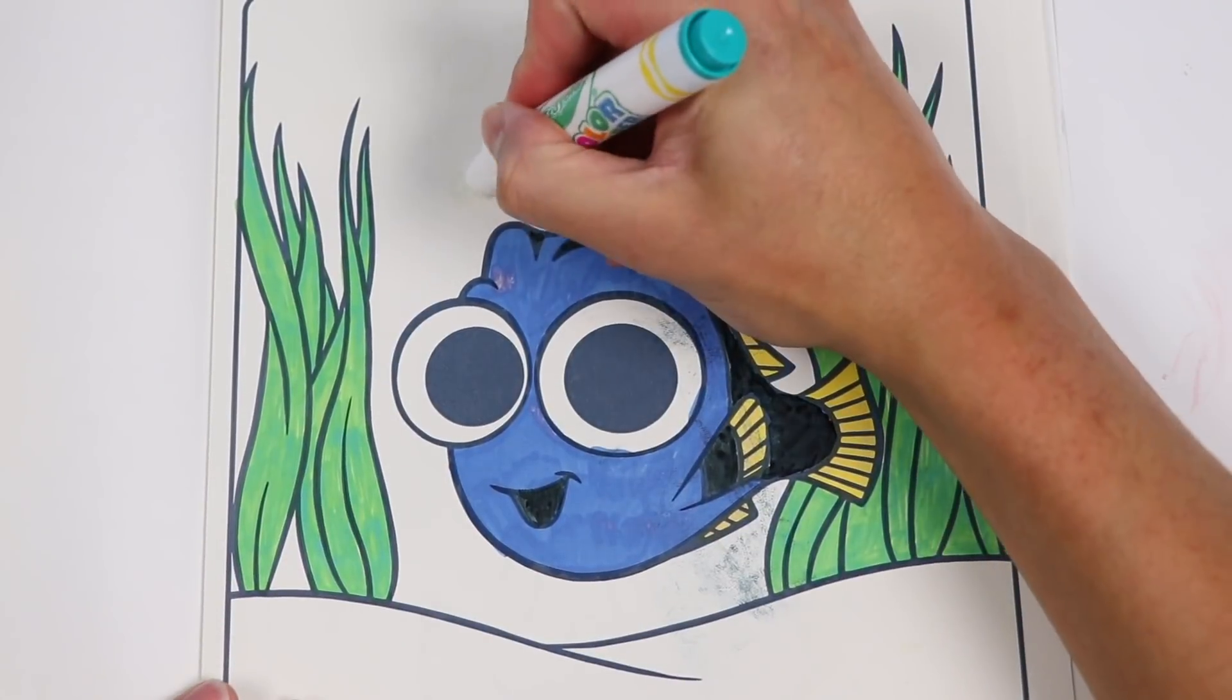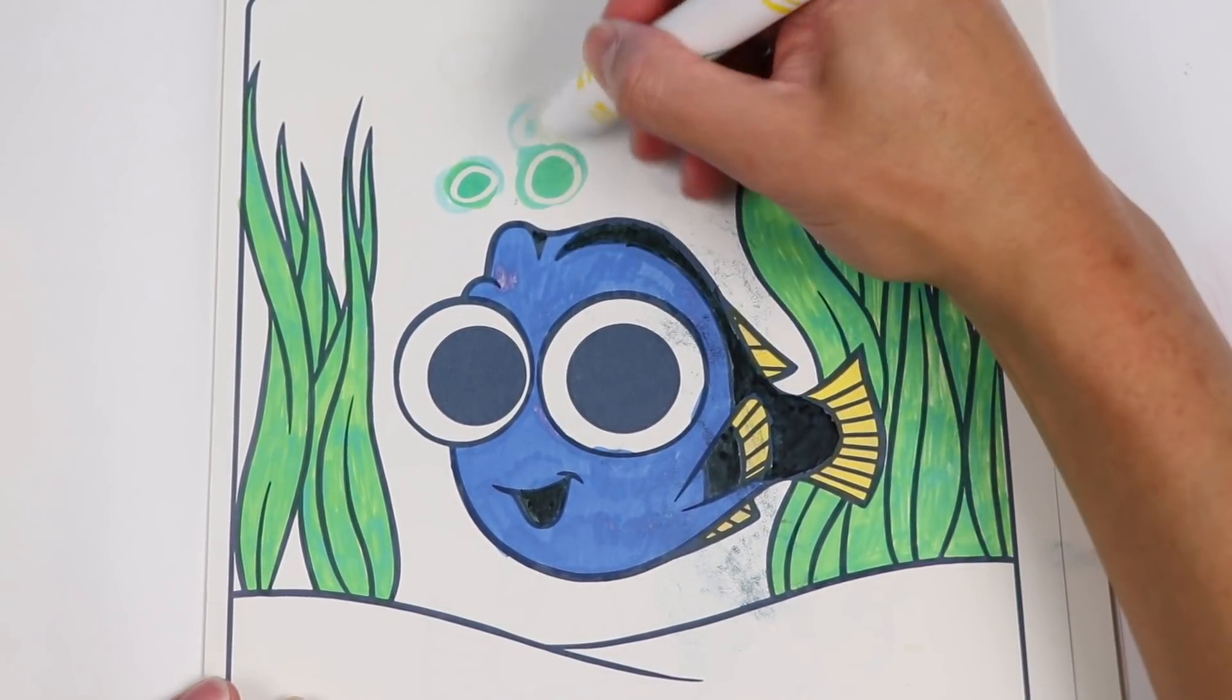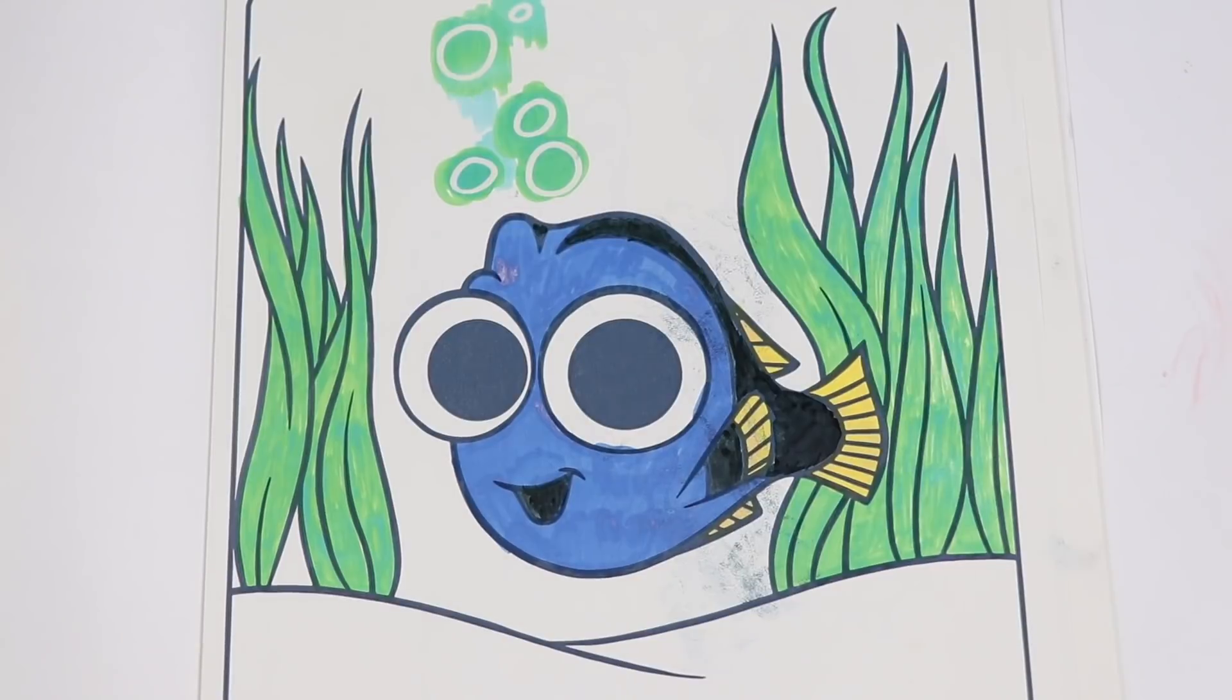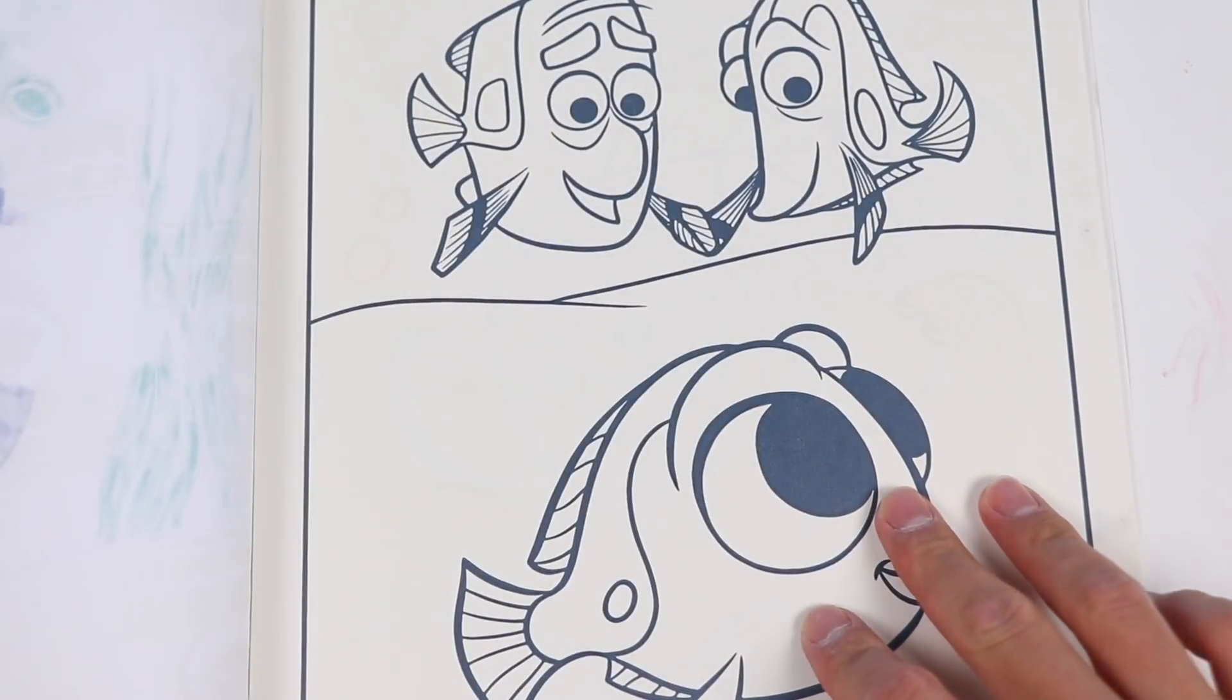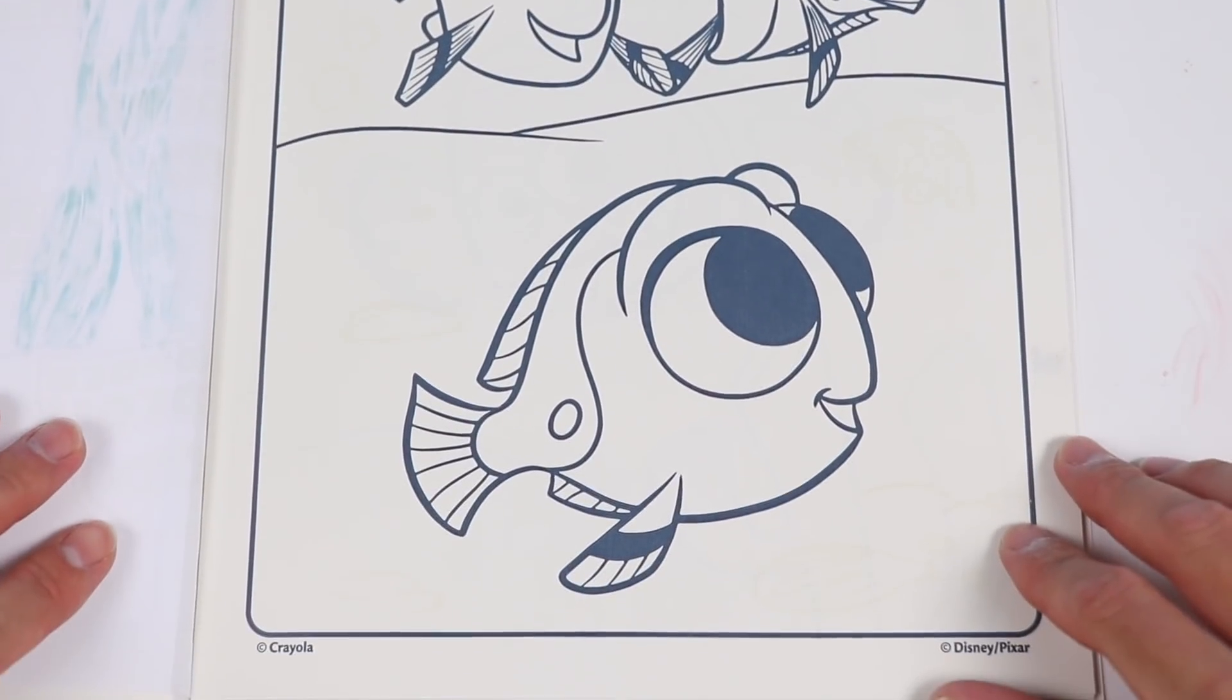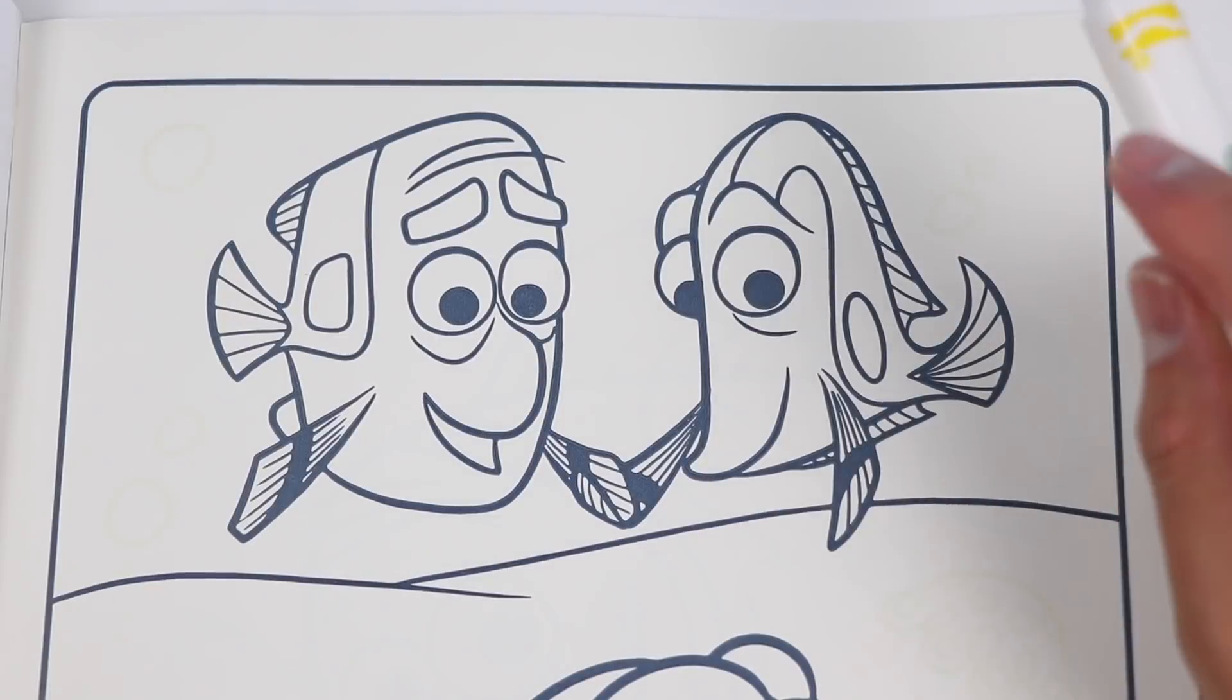Now let's use this light green marker. Oh my gosh, we found hidden images. This is so awesome. They're little bubbles. Nice. Alright, now let's work on this page. Start by using blue.